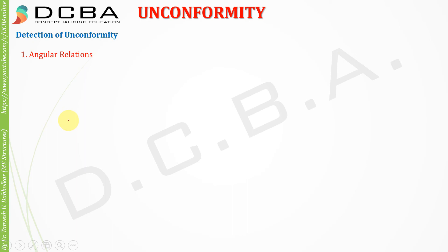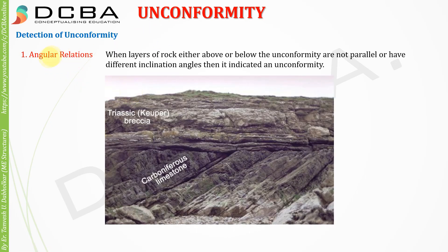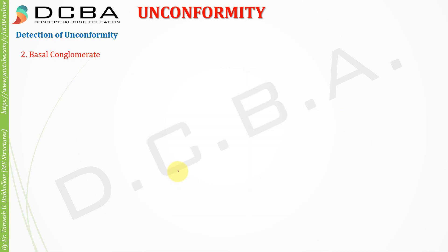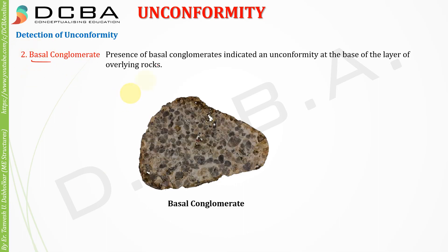Detection of unconformities: The first method is angular relation. If layers of rocks either above or below the unconformity are not parallel or have different inclination angles, it indicates an unconformity. This is the most visually obvious way to detect one.